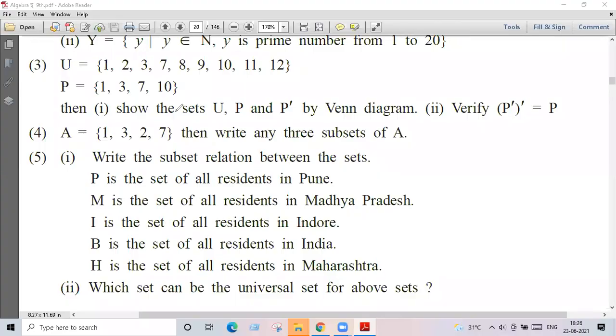Question number three: universal set U is given, that is one, two, three, seven, eight, nine, ten, eleven, twelve. P is given, that is one, three, seven, ten. Then show the sets U, P, and P prime by Venn diagram.